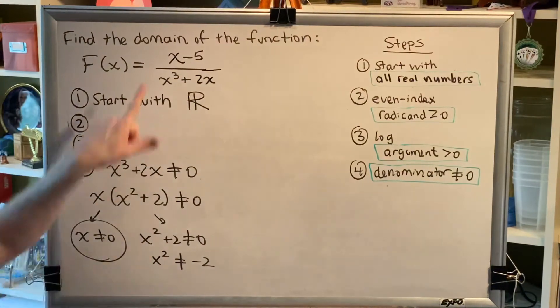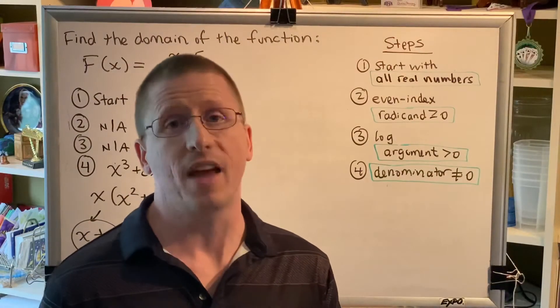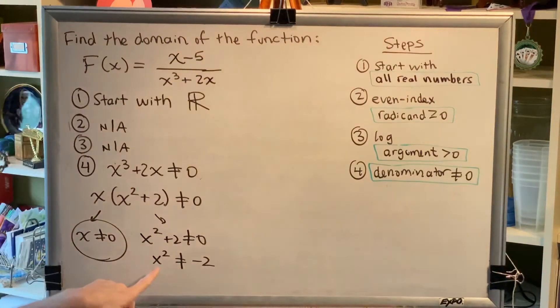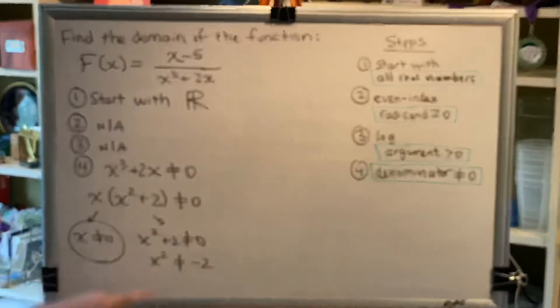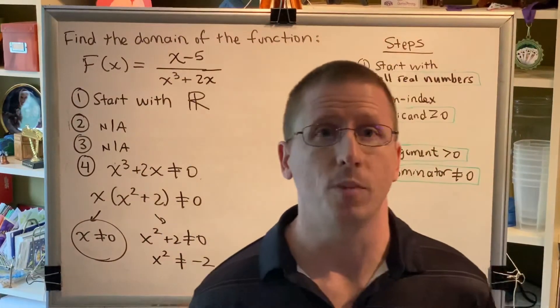Remember, the definition of domain is that it's the collection of all the real numbers x that give us real numbers for y, which means we're only allowed to use real numbers for x. What happens when you square a real number? Well, let's explore all three possibilities.